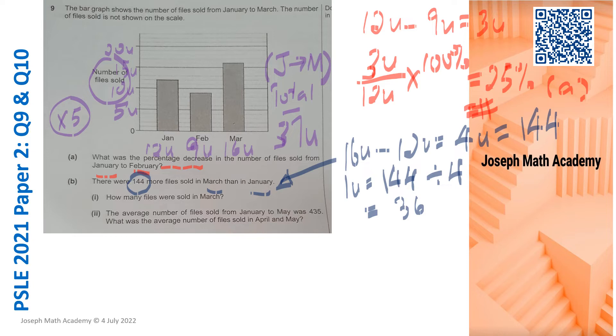B part 1. How many files were sold in March? In March, we know that 16 files were sold. 16 files means 16 units of files were sold. That means 16 units is equal to 16 times 36. So 16 multiplied by 36 is 576. B part 1 is found. This is B part 1. Let's move on to B part 2.